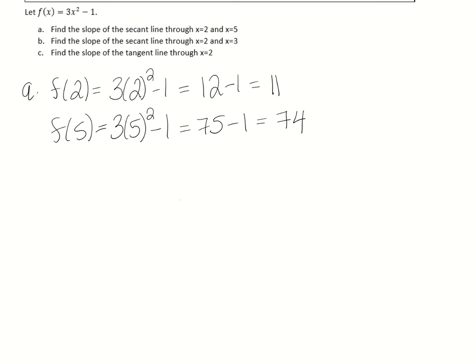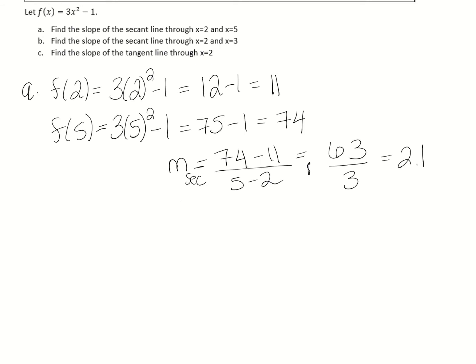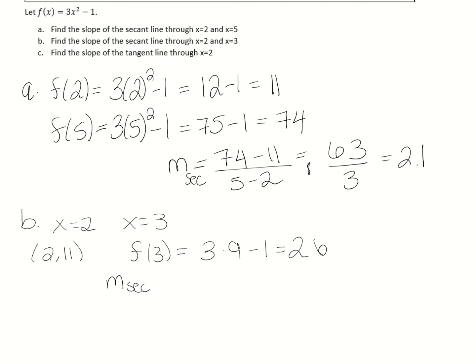To find the slope of the secant line, we compute the change in y over the change in x: m = (74 - 11) / (5 - 2) = 63 / 3 = 21. That is the slope of the secant line from x = 2 to x = 5. Now doing the same from x = 2 to x = 3: f(3) = 3(9) - 1 = 26, so the slope is (26 - 11) / 1 = 15.